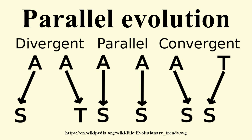Similar to convergent evolution, evolutionary relay describes how independent species acquire similar characteristics through their evolution in similar ecosystems, but not at the same time — such as parallel speciation, defined as the repeated independent evolution of the same reproductive isolating mechanism. An example of this may occur when a species colonizes several new areas which are isolated from, but environmentally similar to, each other. Similar selective pressures in these environments result in parallel evolution among the traits that confer reproductive isolation.